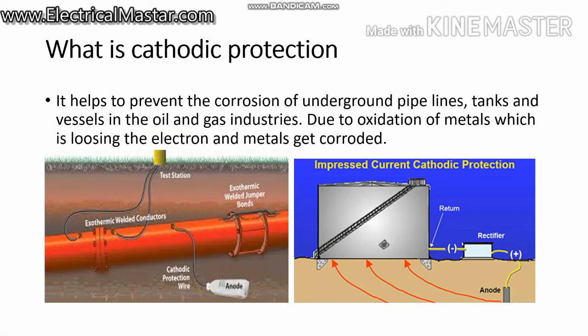What is cathodic protection? We need to understand the basics first. Cathodic protection is a technique — we can say it is a phenomenon or method to prevent any metallic structure placed underground. For example, a gas pipeline is normally placed underground, and that pipeline is installed underground.